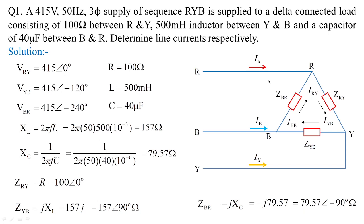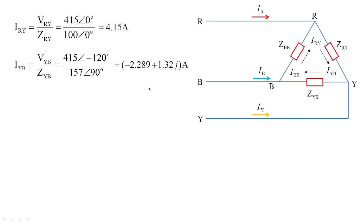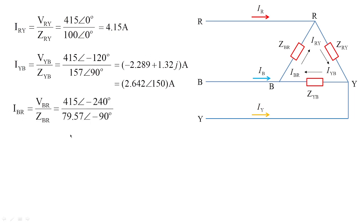With Z_RY, Z_YB, and Z_BR known, we calculate the phase currents: I_RY is 4.15 amperes, I_YB is 2.642 at angle 150 degrees amperes (also expressed in rectangular form), and I_BR is 5.21 at angle minus 150 degrees, or (−4.516 − 2.6j) amperes in rectangular form.